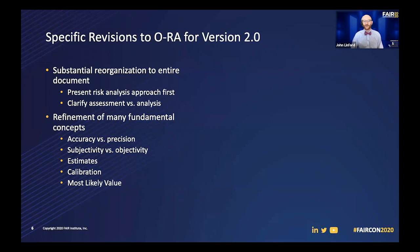We also provided a definition for estimates and estimation, and made an emphasis on using usefully precise estimates — focusing on estimates that allow your decision maker to make a decision without running into diminishing returns trying to find those estimates, and without giving a false air of accuracy due to how artificially narrow those estimates are. We did add some additional calibration discussion in ORA as well, though we still rely heavily on the excellent work from Doug Hubbard in this area. We also aligned around the terminology of 'most likely value,' which is going to be the peak of the distribution that the analyst chooses — which may or may not end up being the mode. So we align on most likely value, minimum, and maximum values for presenting Open Fair results.